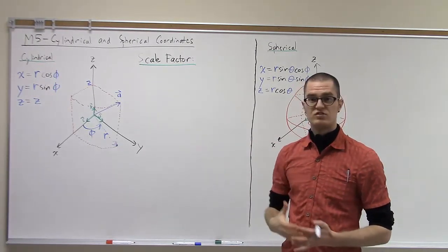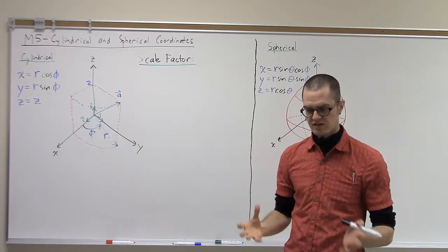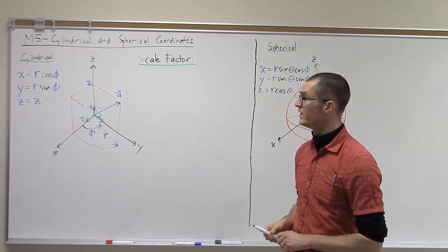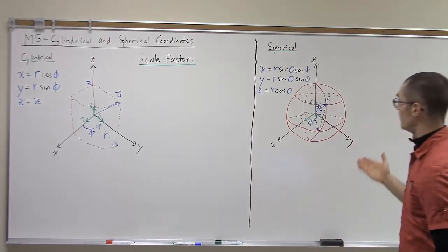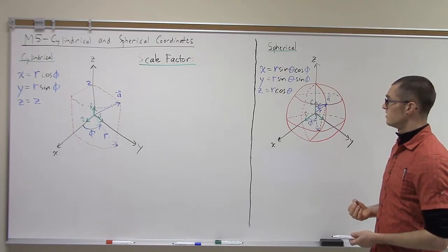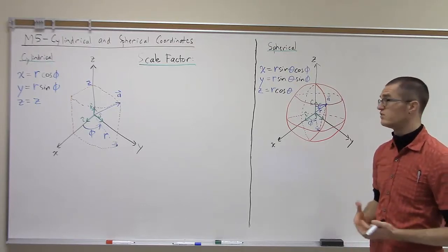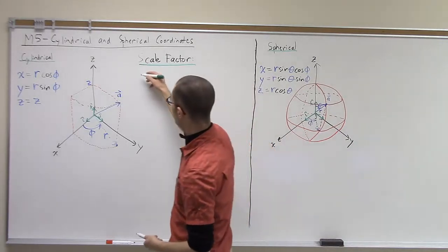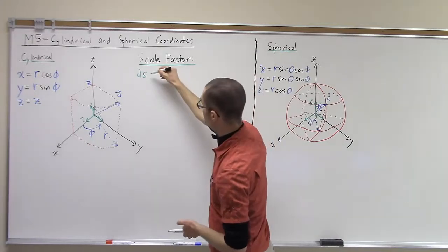That creates issues when we go to take derivatives or integrals, because we're always trying to integrate over an area. We need to account for the fact that a small change in phi gives a different change in distance depending on the value of r. Or, in the spherical coordinate system, a small change in theta might give a different distance depending on the values of r and phi. We'll have a look at how that works out, as this is related to what we call the distance metric in that coordinate system.